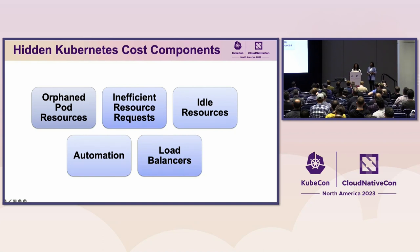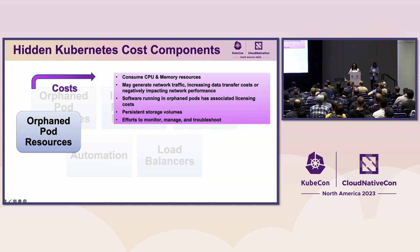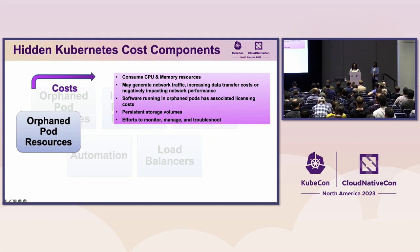Let's start with orphan pods. Even if they're not actively serving any productive workloads, these types of pods still consume memory, which leads to increased costs. They may also generate network traffic, which increases data transfer and may negatively impact network performance. If the software running in these orphan pods has associated licensing costs, those costs will still persist even if those pods are no longer necessary.